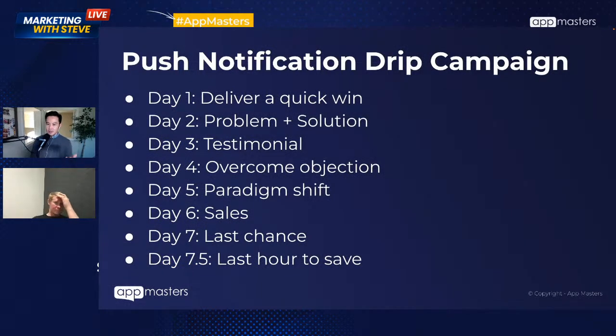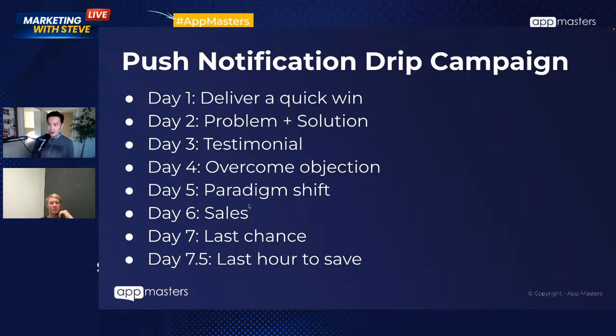Steve shares a drip campaign framework from App Masters Academy, similar to email marketing drip campaigns from the web: deliver a quick win first, solve whatever their problem is, come up with testimonials, overcome an objection, then hit them with sales. Build trust in the very beginning. You probably have a seven-day window, maybe closer to three. Even with emails Steve tries to include a tip - is there something valuable here that if you didn't join the live stream you'd still get value out of?